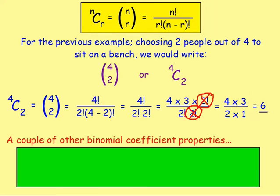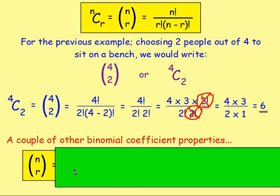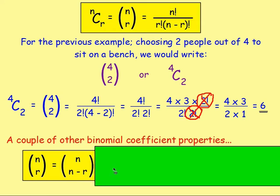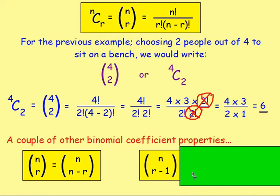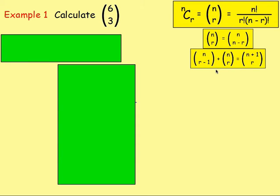There are two important properties to note. First: n choose r equals n choose (n minus r). Second: n choose (r minus 1) plus n choose r equals (n plus 1) choose r. We will look at these in some of the later examples.